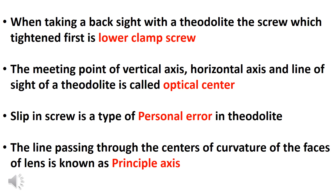The meeting point of the vertical axis, horizontal axis, and line of sight of a theodolite is called the optical center. Slip in screw is a type of personal error in the theodolite.